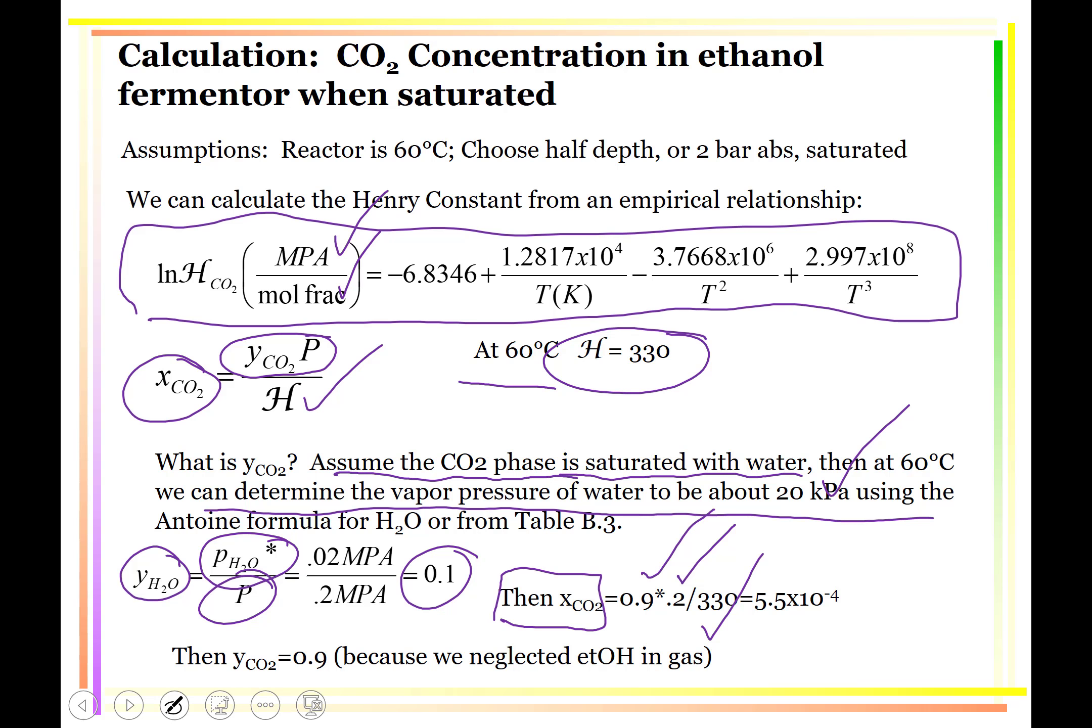So this 0.9 is the mole fraction of CO2 in the vapor phase. And that's quite reasonable because it's just huffing off. There's some ethanol in there, but we're neglecting the ethanol.